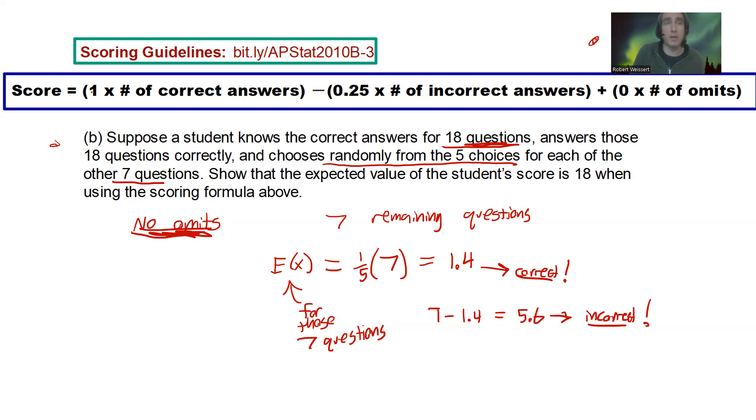I got one times the number of correct answers. Well, I had the 18, but there was 1.4 expected, right? So, 18 plus 1.4. I'm going to put those in parentheses here. So, that's really 19.4 questions the students expected to get right. And it's going to get a point for each of those. And then we're going to subtract a quarter point, deduct a quarter point for the number of incorrect answers, which in this case is 5.6.